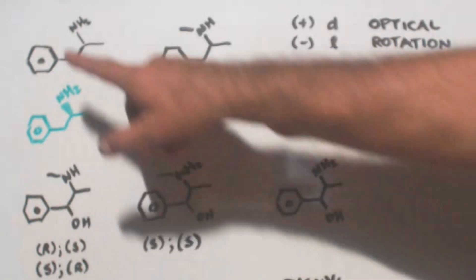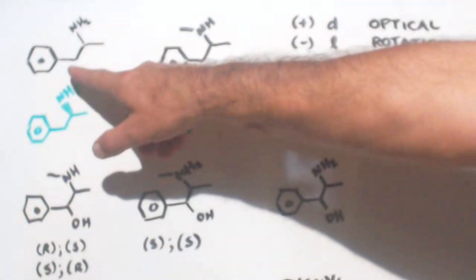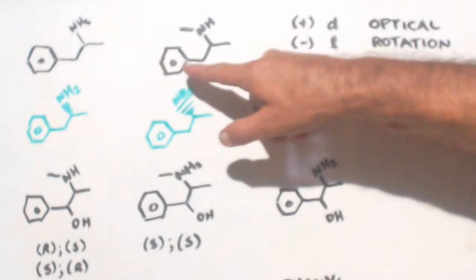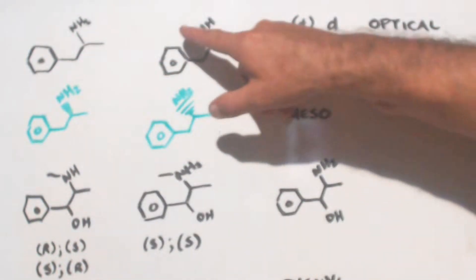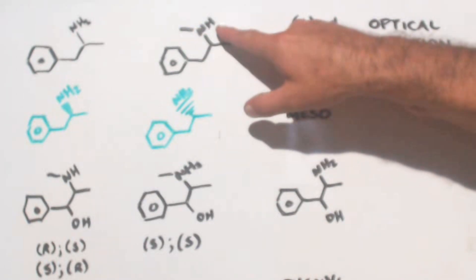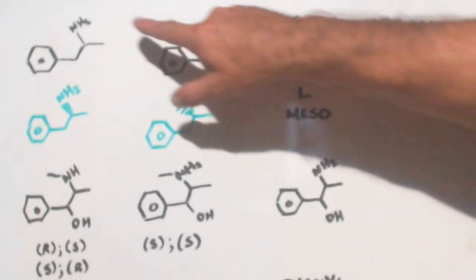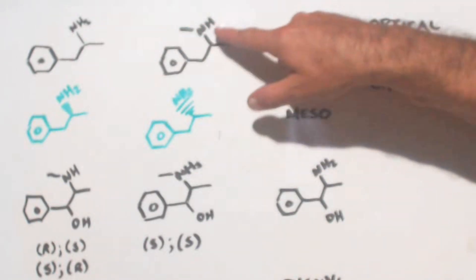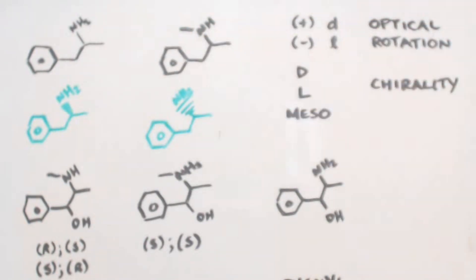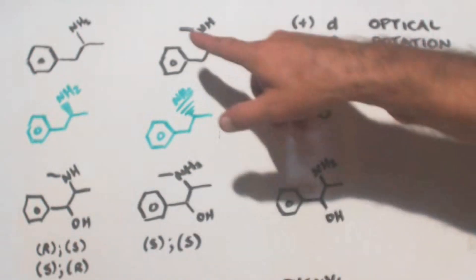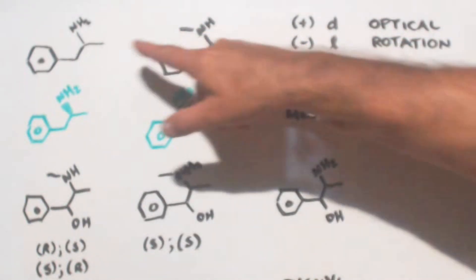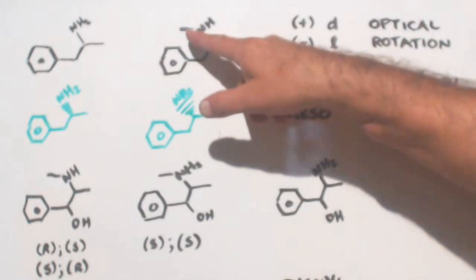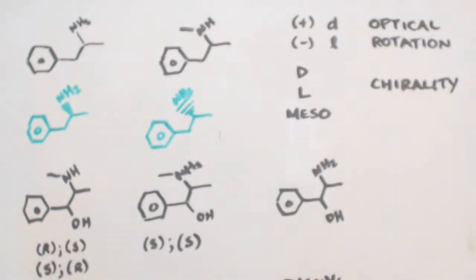What's the difference between amphetamine and methamphetamine? The only difference is up here. One of the H's — there used to be two, now there's one — is replaced by a methyl group. That's why you call it methylamine, because it's an amine with a methyl group on it.